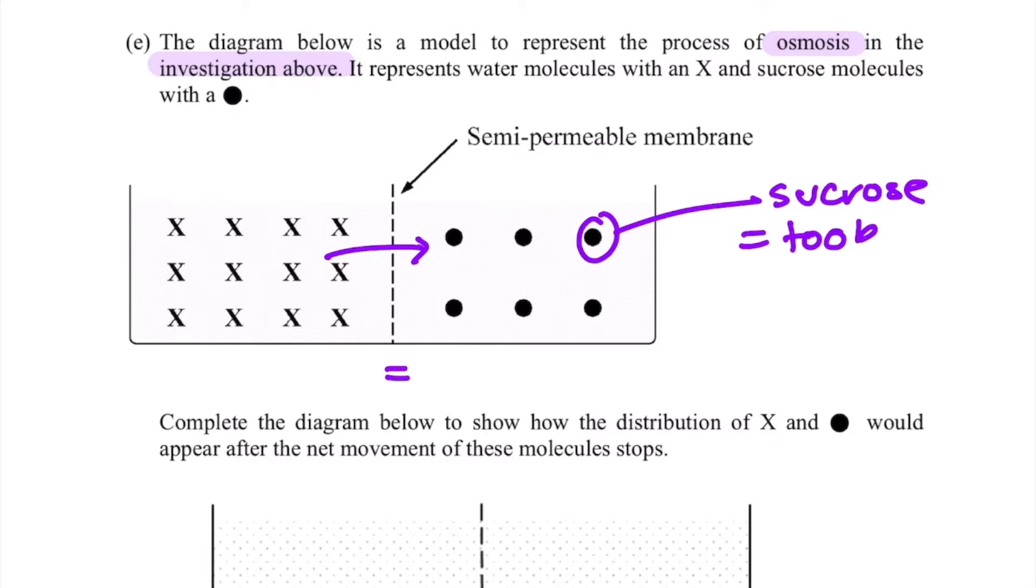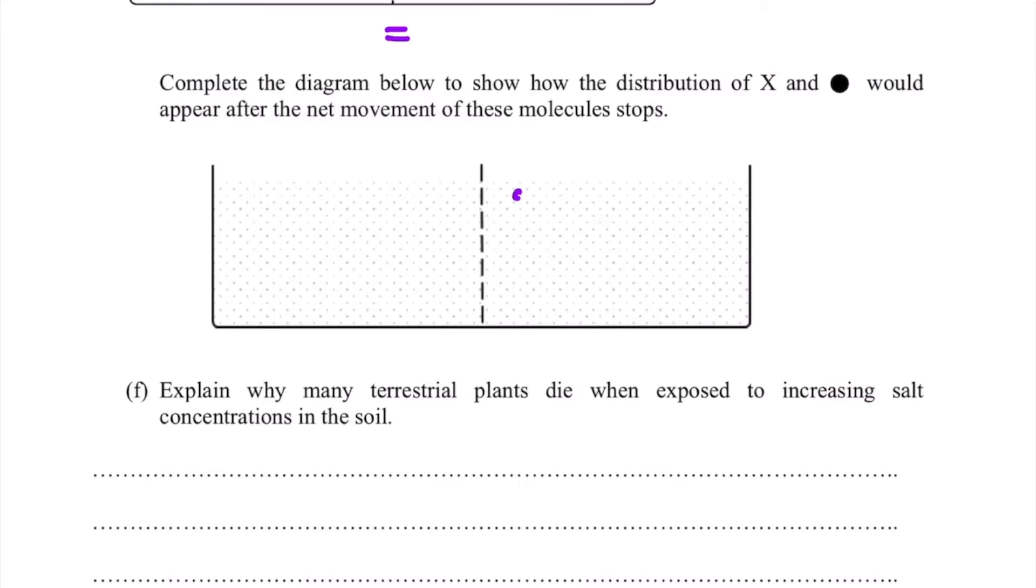So to be able to get our equilibrium, all our water molecules are going to have to move across the membrane. First off we have to have the same number of sucrose molecules, there was six, and next we're going to draw our water molecules in solution with our sugar. There should be the same amount as there was above, which is 12. Due to the sugar molecules being too large, they're not able to pass back through the membrane to reach equilibrium.